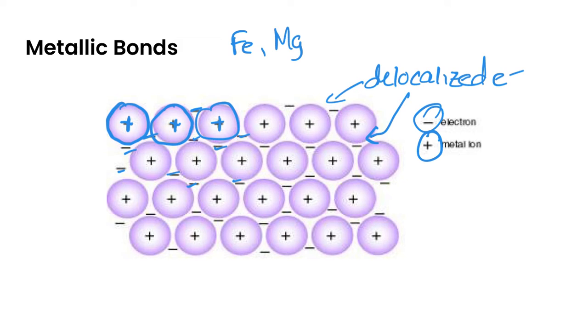And in terms of some other properties, they're shiny, they're silvery, and that's because these valence electrons can absorb and emit light. They're also really flexible and good conductors, and that's because of the delocalized electrons. They are free to move in between the metal ions, so they make really good conductors.